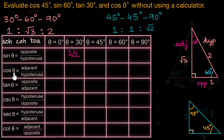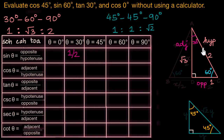Cos theta is the ratio between the adjacent and the hypotenuse. For theta equals 30 degrees, if the adjacent side is √3 units long and the hypotenuse is 2 units long, cos 30 degrees is √3/2. Similarly, tan theta is opposite over adjacent, which is 1/√3.